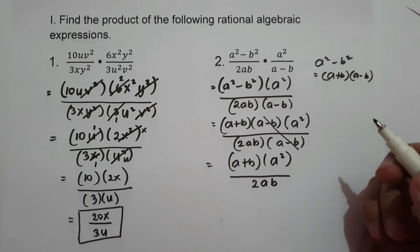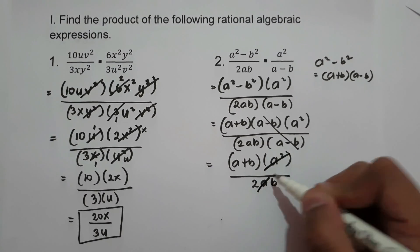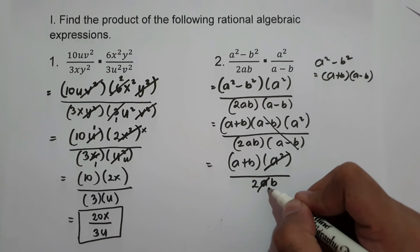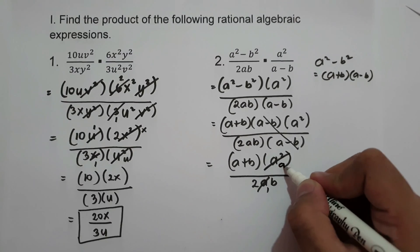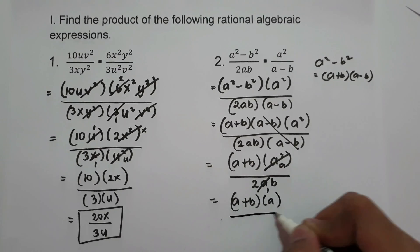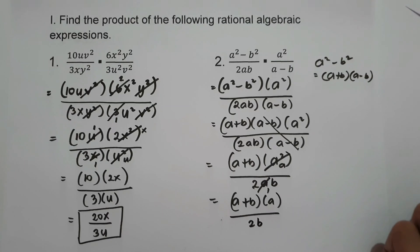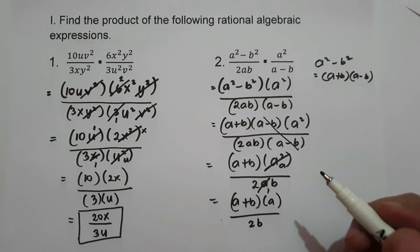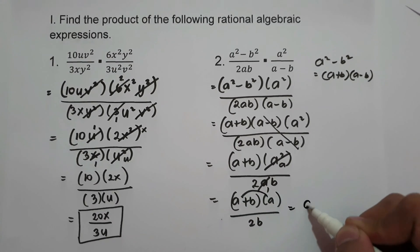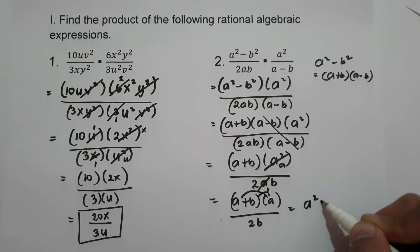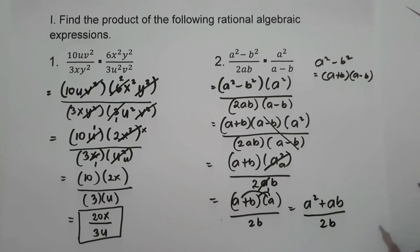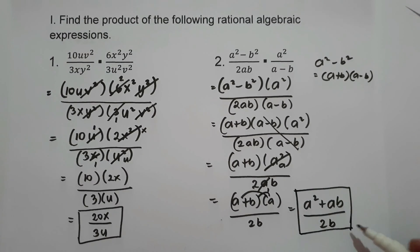We can cancel (a − b) from numerator and denominator. Also, we can simplify a² and a since their greatest common factor is a, so a becomes 1 and a² becomes a. We now have (a + b) times a over 2b. Using the distributive property, a times a is a², and a times b is ab. So our final answer is (a² + ab)/2b.